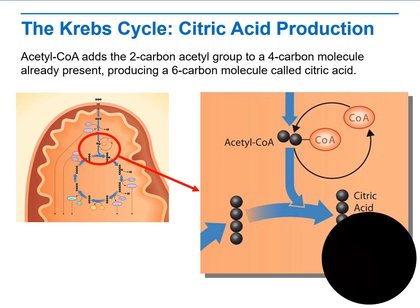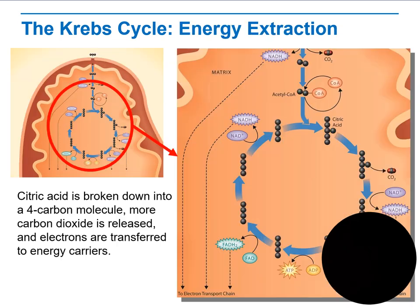In the Krebs cycle, this is the citric acid production step. Acetyl-CoA adds a two-carbon acetyl group to a four-carbon molecule already present, producing a six-carbon molecule called citric acid. After that, there is an energy extraction step: citric acid is broken down into four-carbon molecules, more carbon dioxide is released, and electrons are transferred to energy carriers.